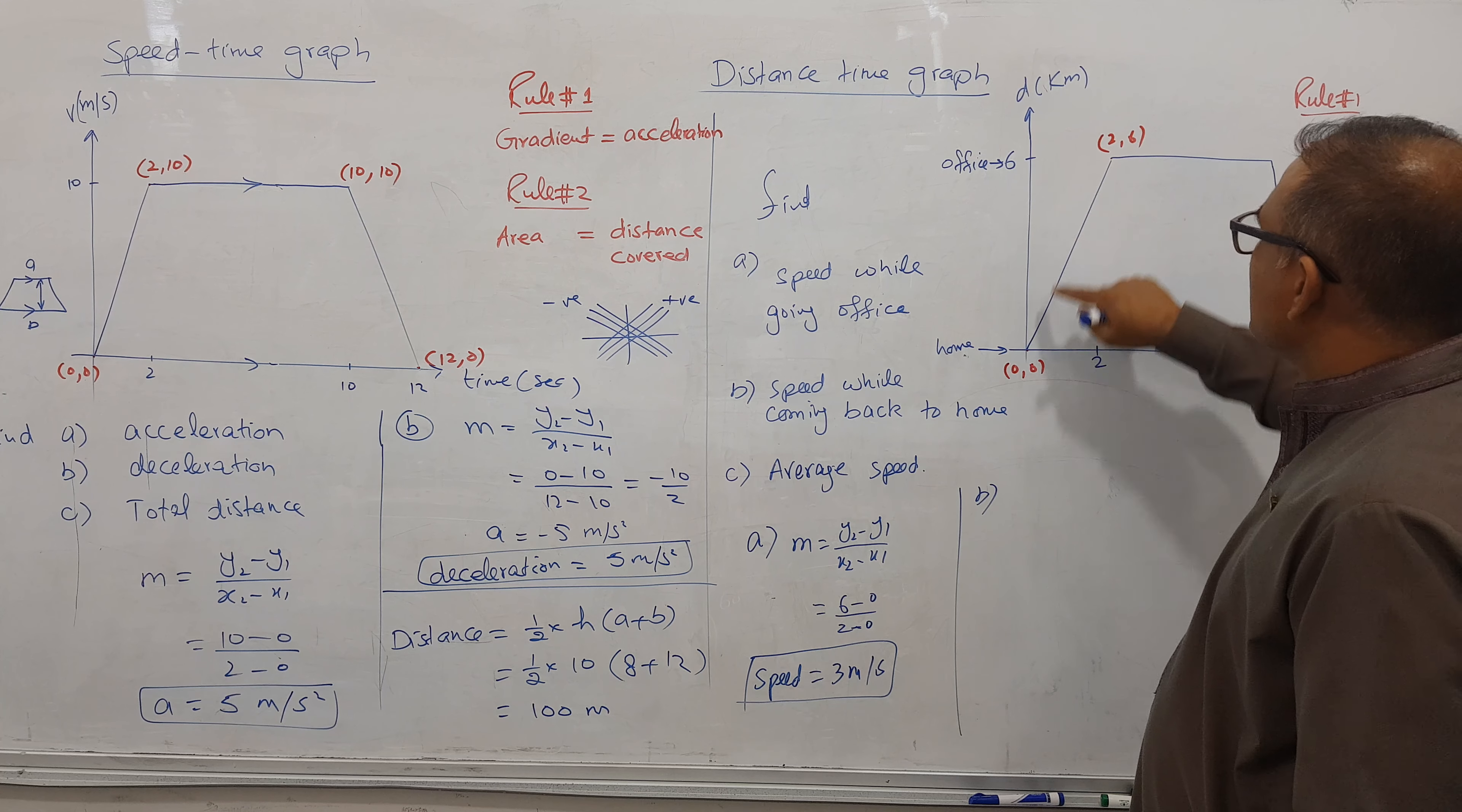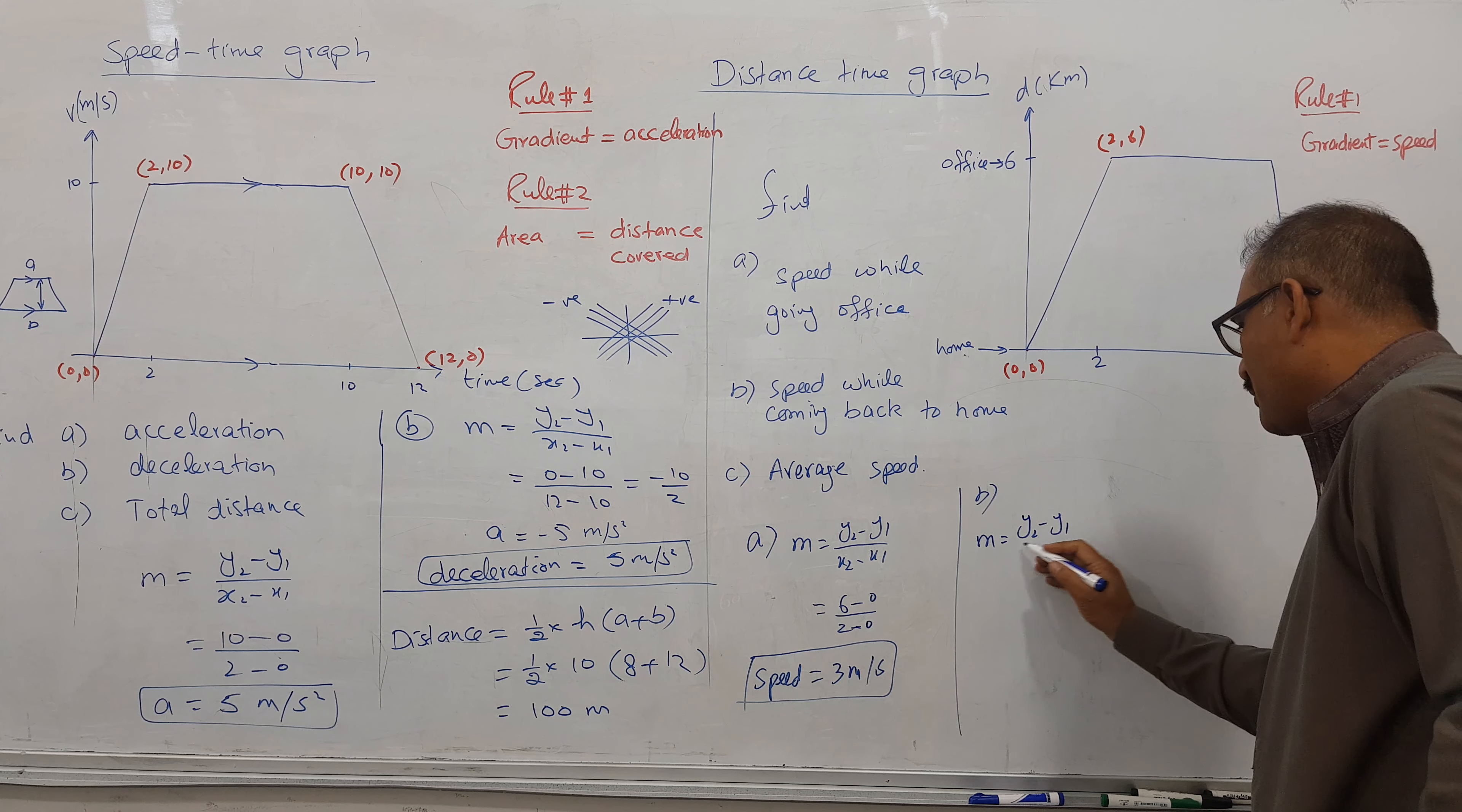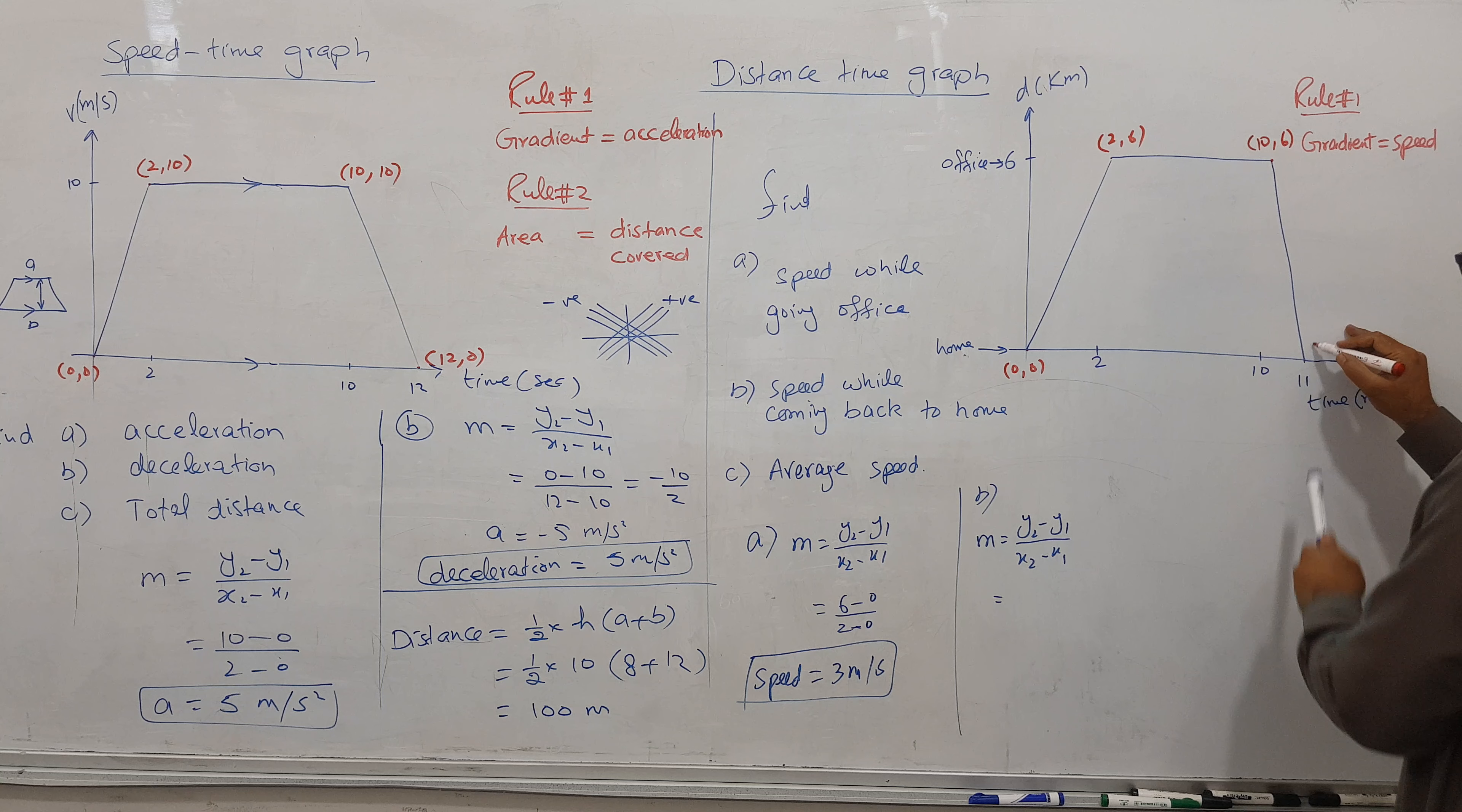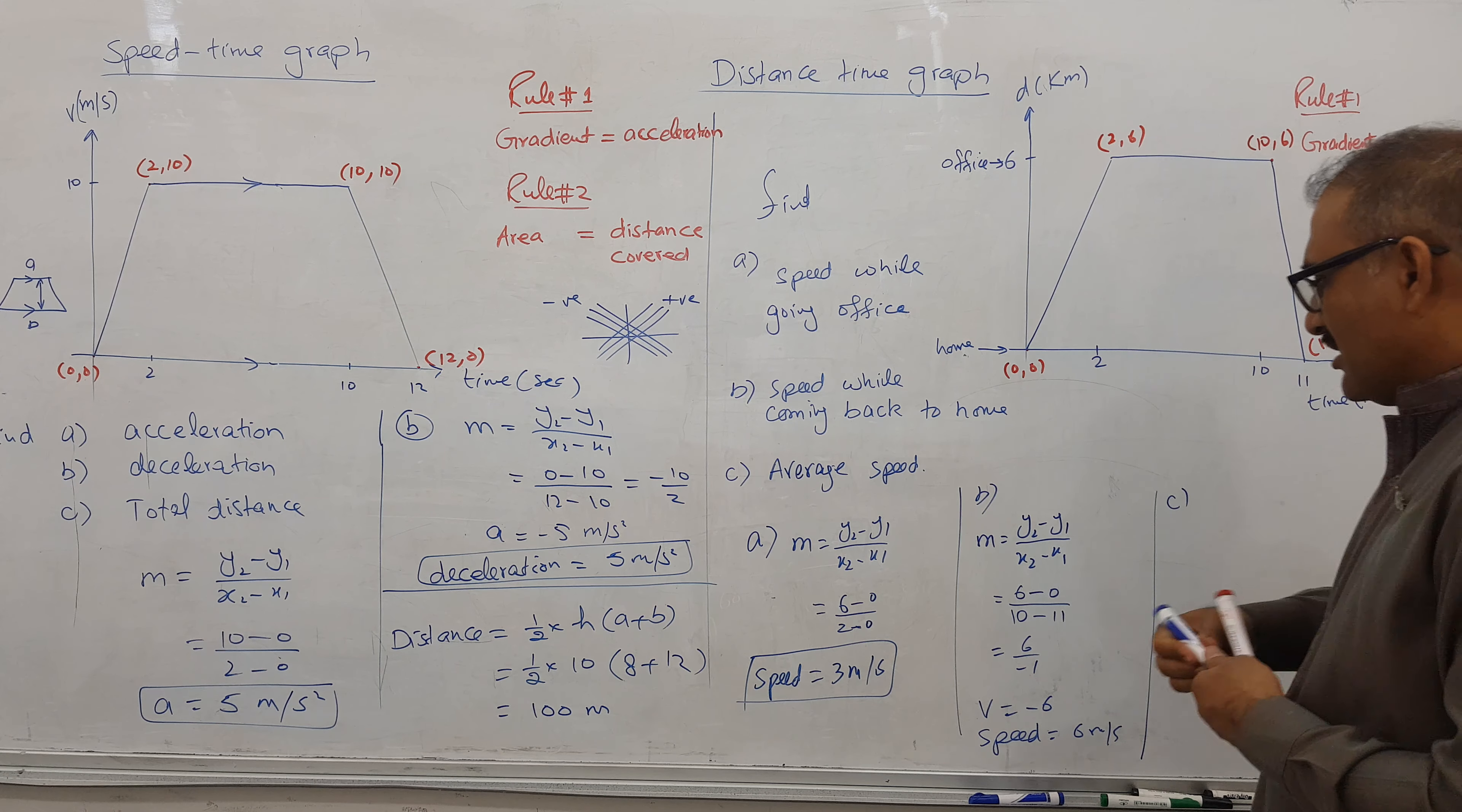Part B is coming back. This is going away, this pause is 8 hours staying in office (10 minus 2), and this is coming back. Using the same formula, at this point x is 10, y is 6; at this point x is 11, y is 0. So 6 over minus 1 gives minus 6. The negative is for direction only showing he's coming back to home. Speed is equal to 6 meters per second.